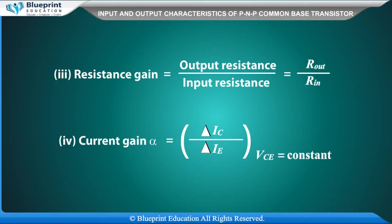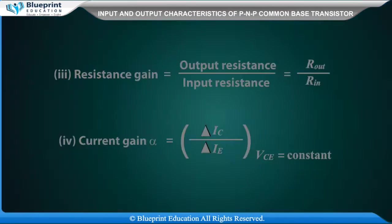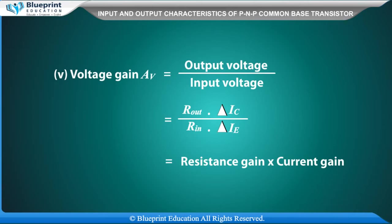Voltage gain is equal to output voltage divided by input voltage, which equals R_out multiplied by delta IC, divided by R_in multiplied by delta IE. This is equal to resistance gain multiplied by current gain.